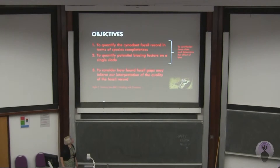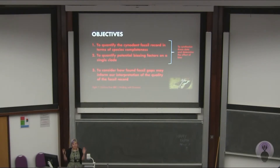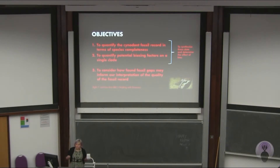The objectives we had for the project were to quantify the cynodont fossil record in terms of species completeness — which can be a difficult task, trying to determine how complete our knowledge is of a single species — and also to quantify the biasing factors that would affect a single clade. We wanted to do that rather than comparing a bunch of disparate groups, to see whether a single biasing factor would show up as correlating with the diversity of this group, and then consider how fossil gaps would inform our knowledge and whether those biasing correction methods could be applied globally.